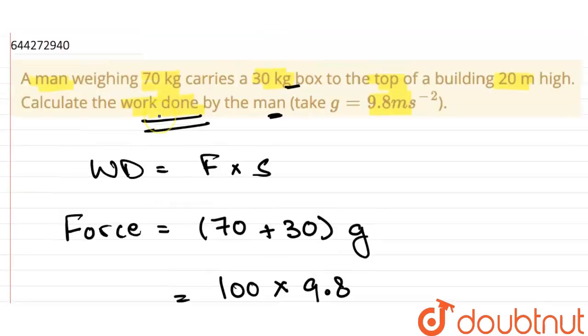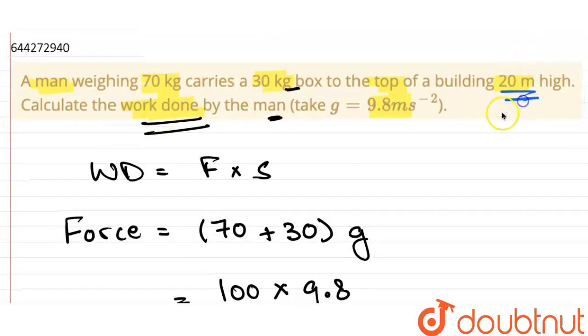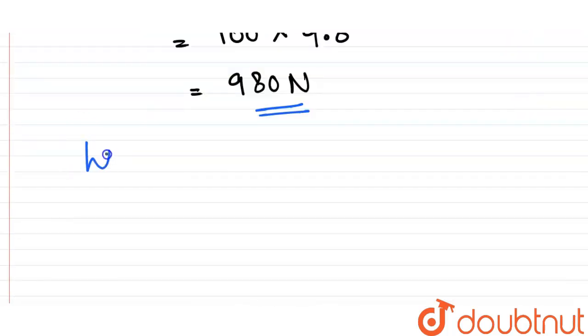So this will be the total force acting on the man, and displacement is given to us to be 20 meter high. So our work done will be equal to 980, that is the force, into 20, that is the displacement. This will give us a total of 19600 joules.